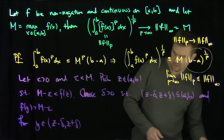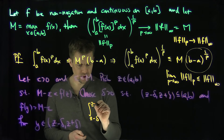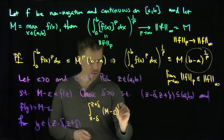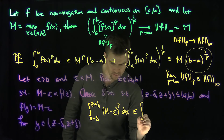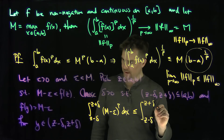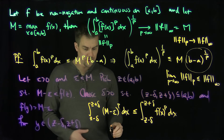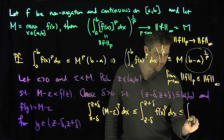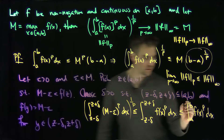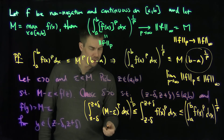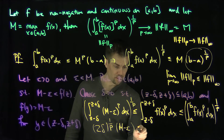The final step is we integrate over that region. Looking at the integral from z minus delta to z plus delta of (M minus epsilon) to the power p dx: on this interval we know the function exceeds M minus epsilon, so this is less than or equal to the integral from z minus delta to z plus delta of f(x) to the power p dx, which is in turn less than or equal to the full integral from a to b of f(x) to the power p dx. Raising to the 1/p, we get that 2 delta to the 1/p times (M minus epsilon) is less than or equal to the Lp norm of f.